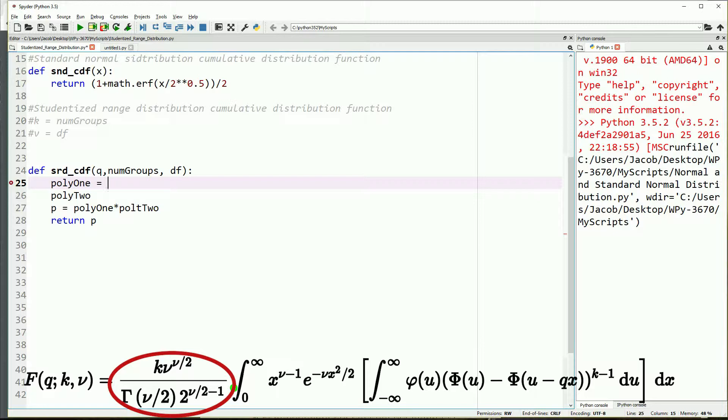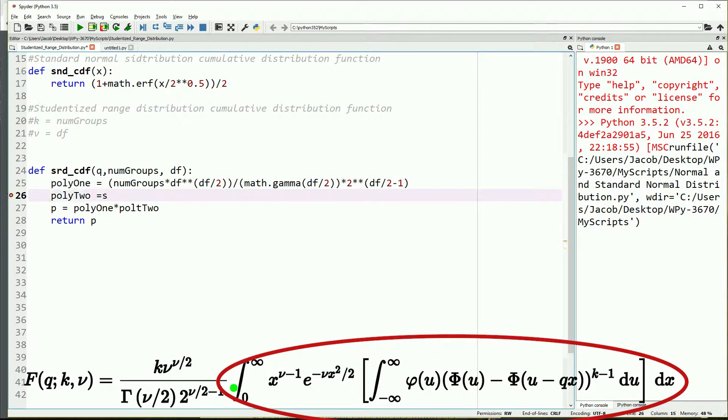Let's continue to deconstruct this. We'll start by doing polynomial 1. So we'll do the number of groups times the degrees of freedom, and we'll take degrees of freedom to the power of degrees of freedom divided by 2, and all of that will be divided by the gamma function of degrees of freedom divided by 2 times 2 to the power of degrees of freedom divided by 2 minus 1. Make sure to pay careful attention to the brackets here.